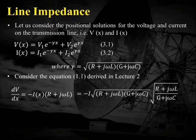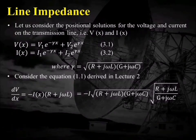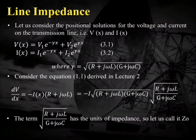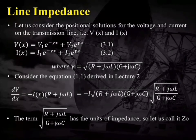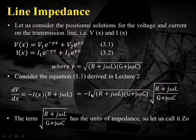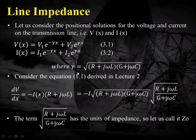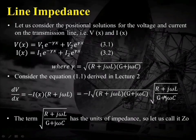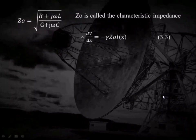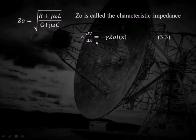By multiplying and dividing this equation with the square root of (G + jωC), I can rewrite this equation, where the square root of (R + jωL)(G + jωC) has the units of impedance. So let us call it Z0. We can see that I(x) times (R + jωL)(G + jωC), which is gamma, and the square root of (R + jωL)/(G + jωC) is renamed as Z0. So dV/dx reduces to minus gamma Z0 I(x).